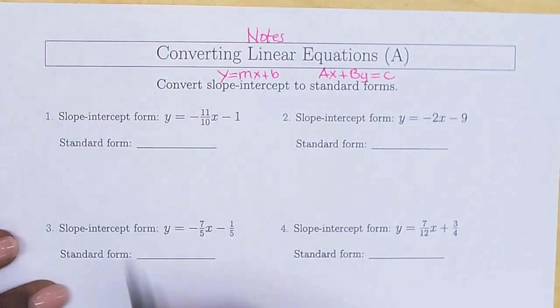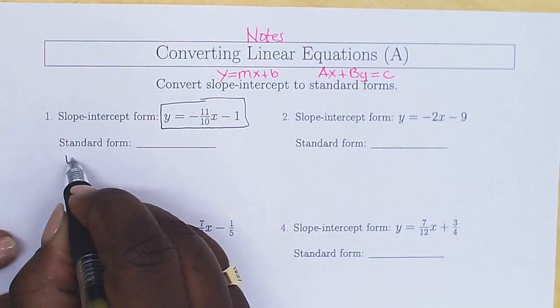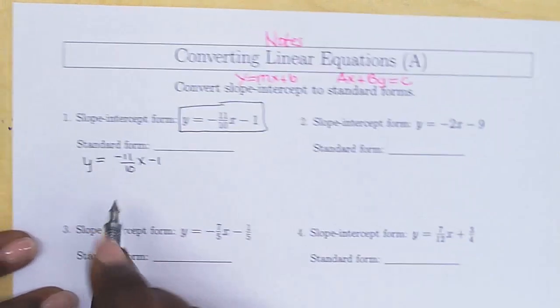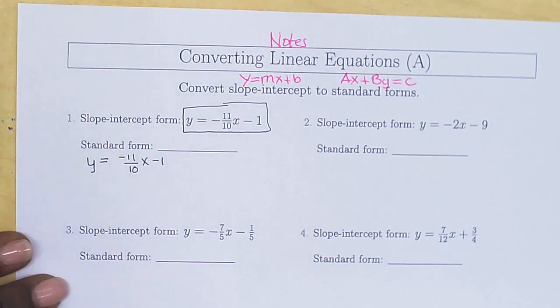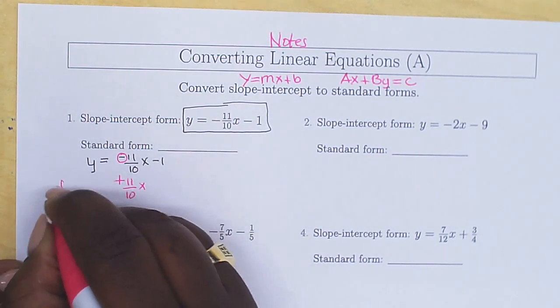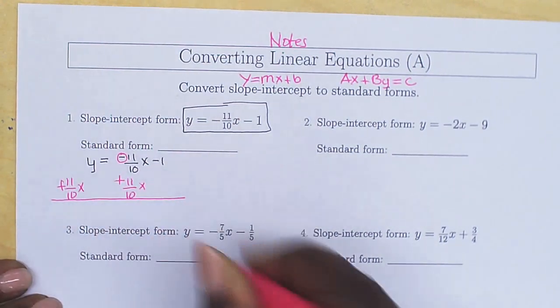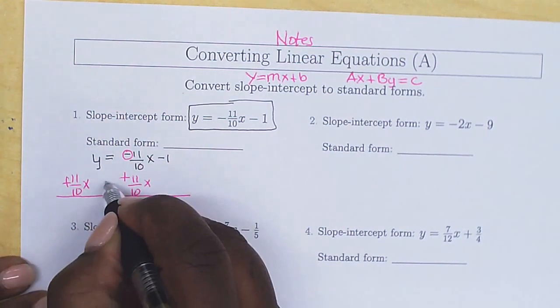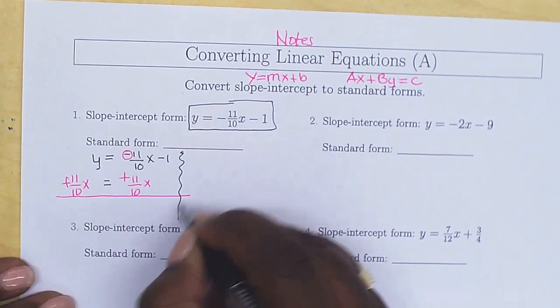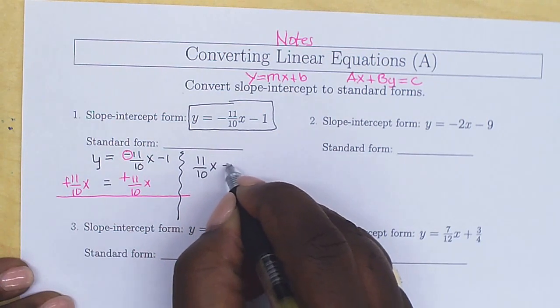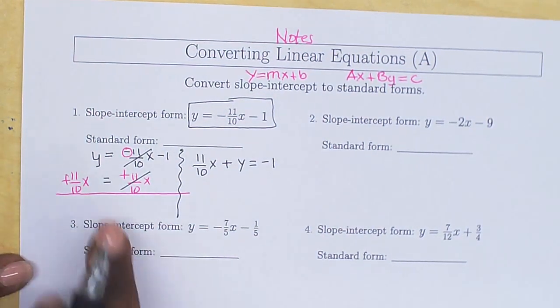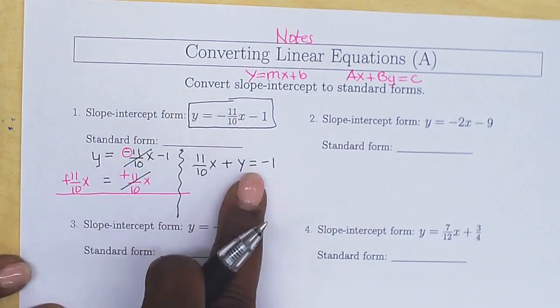The first step is you need to write this equation. We're going to write that here, y equals negative 11 divided by 10x minus 1. We want to move this quantity over to the left. You do that by doing the opposite. Since this is negative, we're going to do a plus 11 over 10x on each side. We do the same on each side of the equal sign, and we rewrite it.